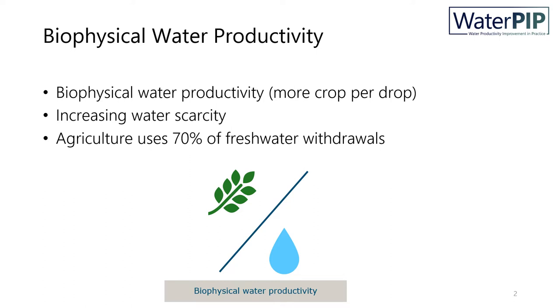If you consider that agriculture accounts for a large portion of total freshwater withdrawals, increasing agricultural water productivity can free up water for other sectors.